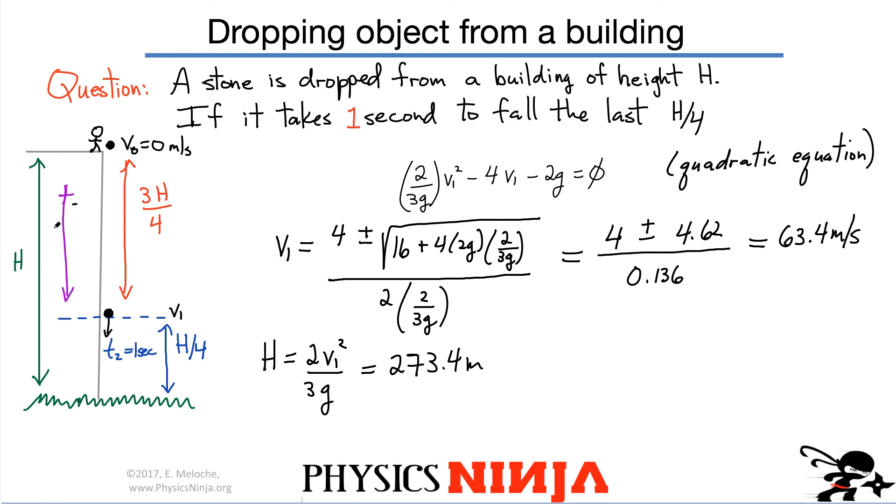Now, if you want to know the total time for it to fall, once you know the height, that becomes very easy. If you want to find out the total amount of time, you know if something falls a distance, if its vertical displacement is H, and if its initial velocity from the top was zero, then the amount of time is simply one-half gt squared. So the amount of time will simply be 2H divided by g and take the square root of that number. And at the end, I think I get 7.47 seconds.